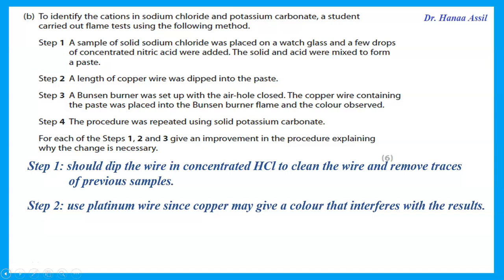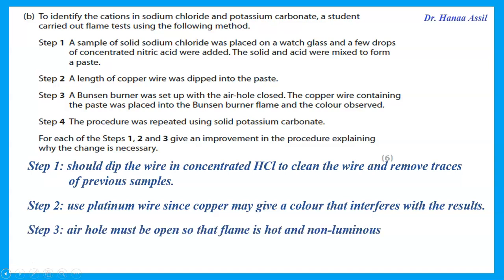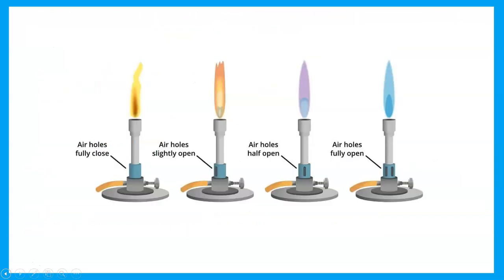Second, a copper wire should not be used — we use platinum wire, as copper may give a color that interferes with results. Third, the Bunsen burner air hole should be open so the flame is hot and non-luminous. With the air hole closed the flame is not hot enough. We place the platinum wire with the salt into the non-luminous flame of the Bunsen burner.